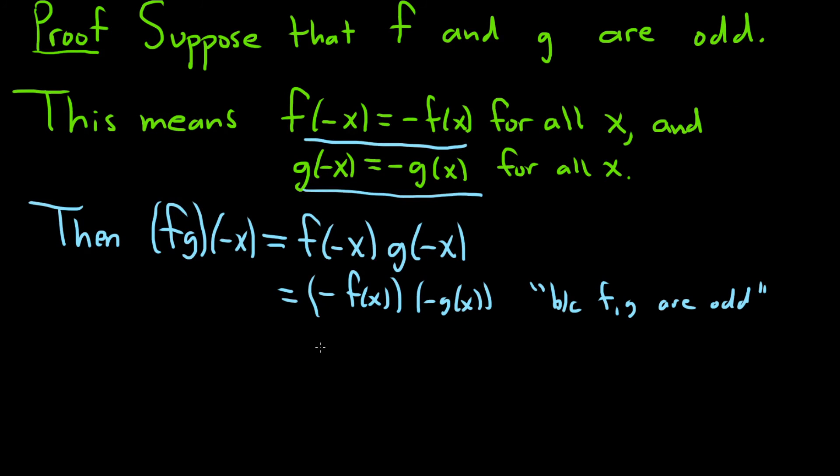And then negative times negative is positive, so this is f of x times g of x. And by definition of multiplication, this would be just fg of x. And this is true for all x.